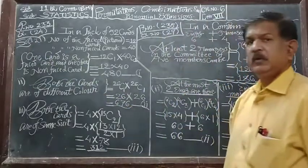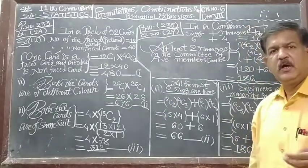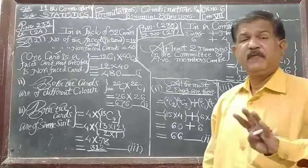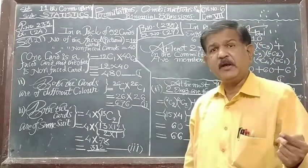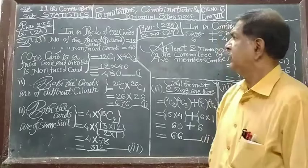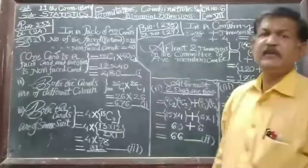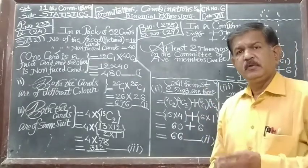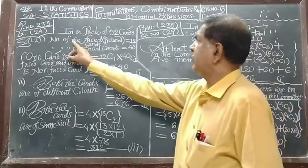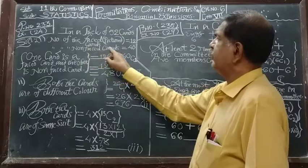In a pack of 52 cards there are four suits: heart, club, diamond, and spade. Number of face cards, meaning picture cards, is 12 cards, and non-picture cards, meaning non-face cards, are 40 cards. Then one card is a face card and other card is the non-face card. Two cards are drawn at a time.